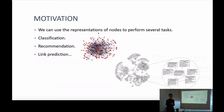We would like to generate representations for each node so that we can perform several tasks. One task is classification — in a social network, we can classify a new node as male or female; in a citation network, we can classify papers into machine learning or software engineering categories. A second task is recommendation — given a new user, we can recommend friends or new papers to read. Similarly, we can perform link prediction and other tasks.